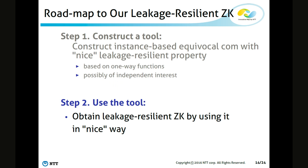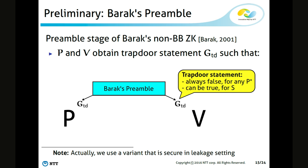Now let me explain our leakage resilient zero knowledge protocol. Our protocol uses the so-called Barak's preamble, which is the preamble stage of Barak's non-black-box zero knowledge. The detail of Barak's preamble is not needed here. What is needed is the fact that after the preamble, the prover and the verifier obtain a statement called the trapdoor statement, and it is guaranteed that any cheating prover cannot make the trapdoor statement true, but there exists a simulator who can make the trapdoor statement true and obtain a witness for it by using the code of the verifier. In this work, I need to modify Barak's preamble so that it can be used in the leakage setting.